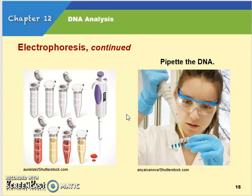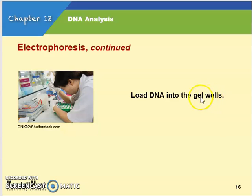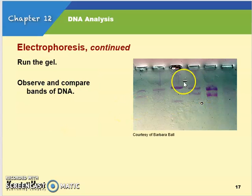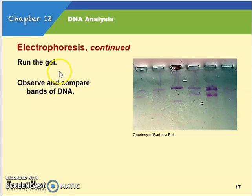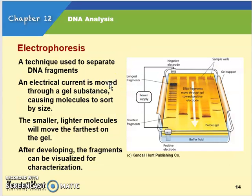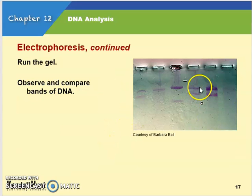If you go to college and take an advanced biology or forensics course, you'll definitely do this. You start by pipetting the DNA and loading it into the gel wells — those small cuts you can see in the gel image. Then you run the gel by activating the positive and negative electrodes, which causes the DNA to move through the gel. When it runs, you'll see very defined lines called bands, and we can observe and compare those bands of DNA.